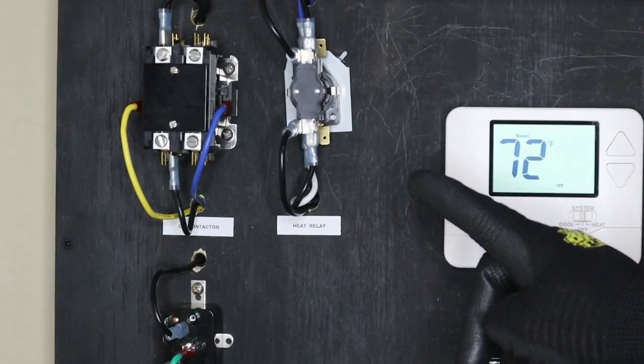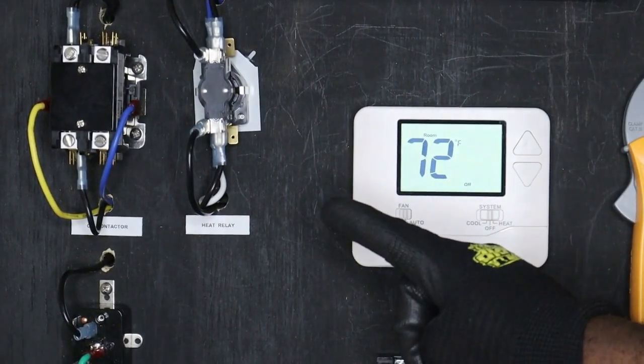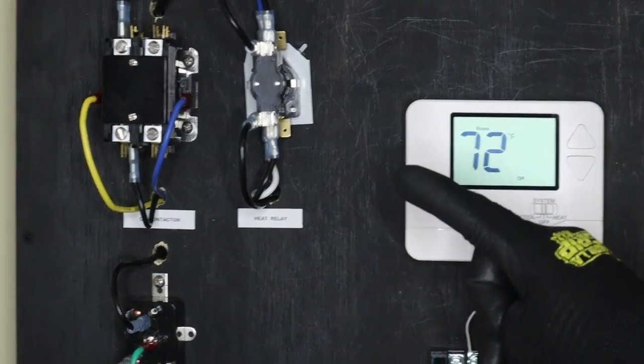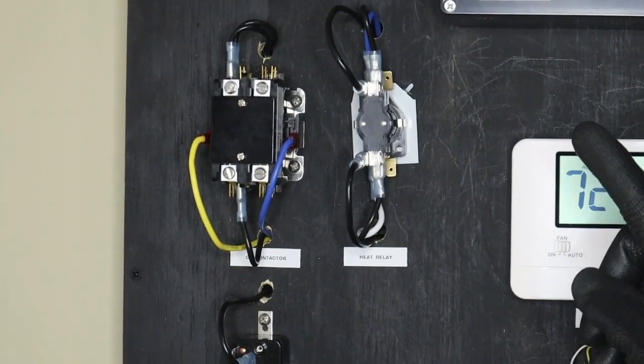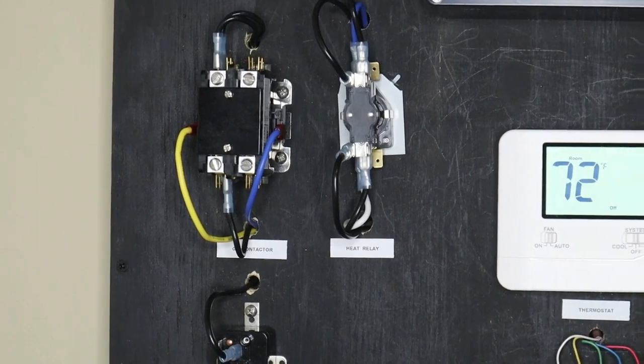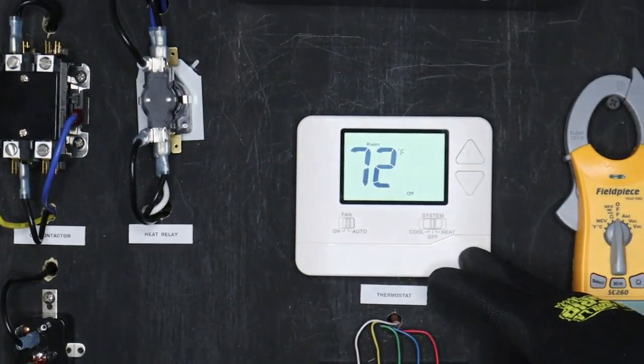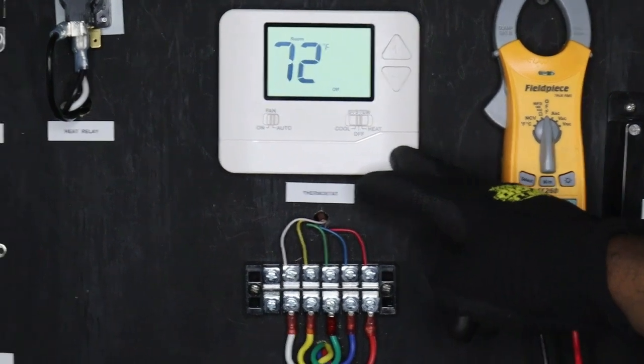To the right of the cooling contactor is my heat relay. This supplies high voltage to my stage one and stage two heat. To the right I'm using a non-programmable thermostat.